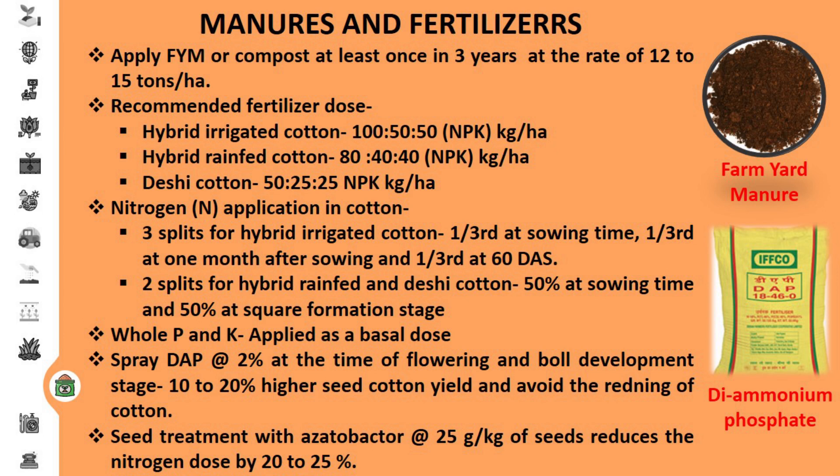For hybrid rain-fed and desi cotton, the nitrogen dose is split into two doses: 50 percent at sowing and remaining 50 percent at the square formation stage. Whole phosphorus and potassium are applied as basal. Spraying of DAP at the rate of 2 percent at the time of flowering and boll development stage increases cotton seed yield by 10 to 20 percent and also avoids reddening of cotton seeds. Also treat with Azotobacter at the rate of 25 grams per kg of seeds, which reduces the nitrogen dose by 20 to 25 percent.